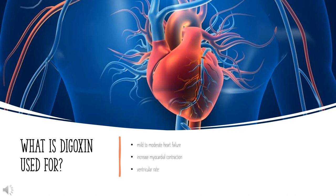Digoxin is indicated in the following conditions: 1. For the treatment of mild to moderate heart failure in adult patients. 2. To increase myocardial contraction in children diagnosed with heart failure. 3. To maintain control of the ventricular rate in adult patients diagnosed with chronic atrial fibrillation. 4. In adults with heart failure, when clinically possible, digoxin should be administered in conjunction with a diuretic and an angiotensin-converting enzyme (ACE) inhibitor for optimum effects.